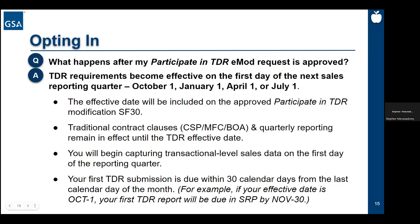Once a TDR participant, the requirement to capture transactional-level data — the 12 mandatory and four optional elements — begins on the effective date, which will be October, January, April, or July 1st. The key date to remember and mark on your calendar is the mod effective date shown in the SF-30 of the awarded participate-in-TDR mod. This is the day your contract exits from traditional quarterly clauses and sales reporting requirements, and the day TDR-related clauses and sales reporting requirements begin. The time between the award of the participate-in-TDR eMod and the mod effective date can be used to get your internal systems and procedures prepared so that you can successfully transition your contract into TDR.